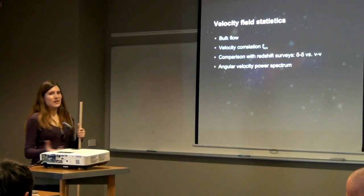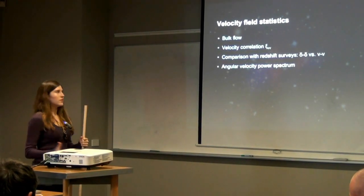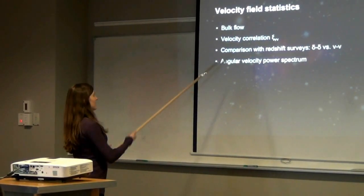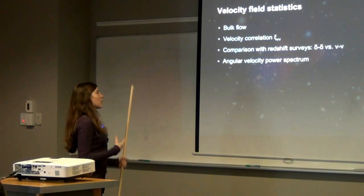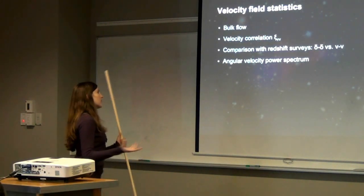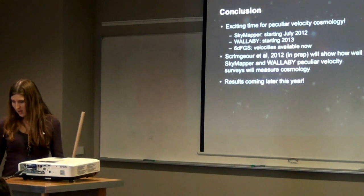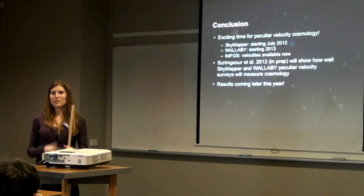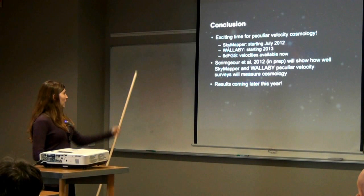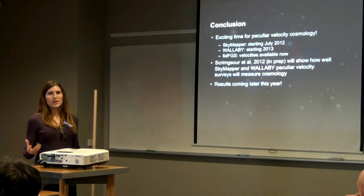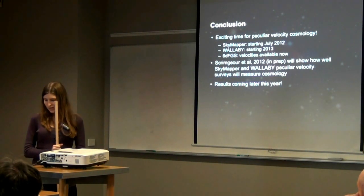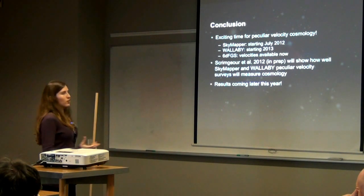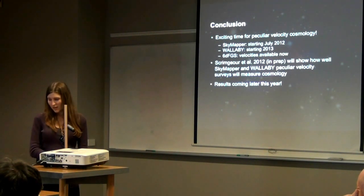Once I've made these simulated surveys, I apply different statistics for analysing the peculiar velocities: bulk flow, velocity correlation function, comparing the velocity field with the density field, or measuring an angular velocity power spectrum. This is a really exciting time for peculiar velocity cosmology because of these upcoming surveys, as well as 6dFGS, which has already measured a large number of peculiar velocities. Hopefully later this year I'll be publishing a paper showing how well these will do in measuring cosmology.